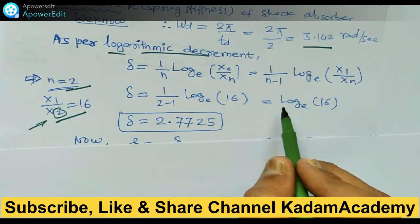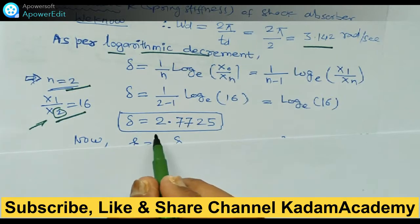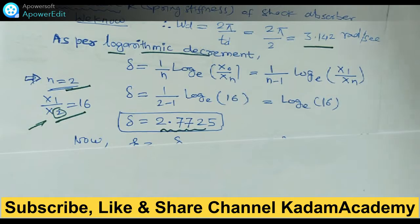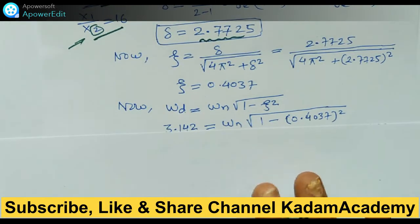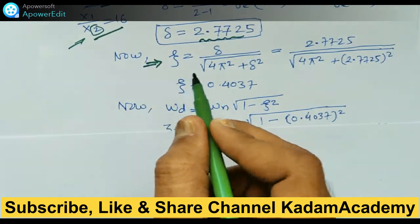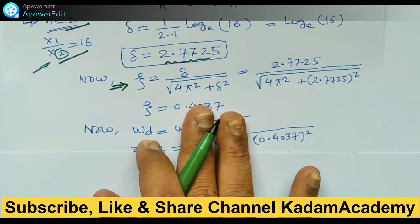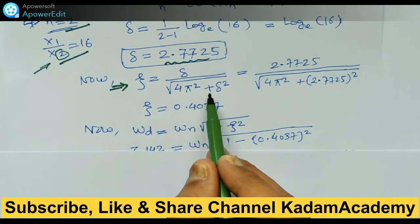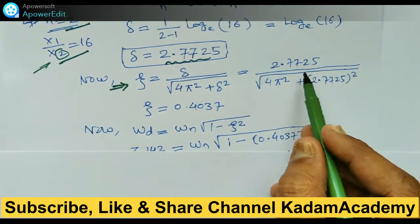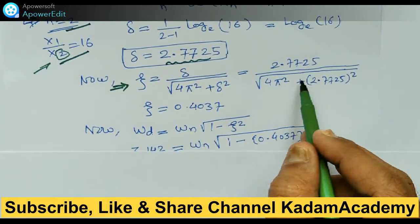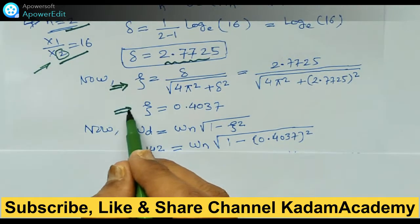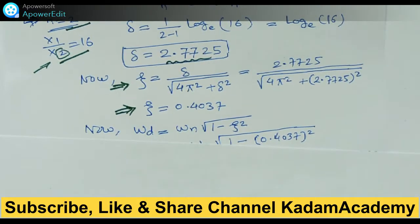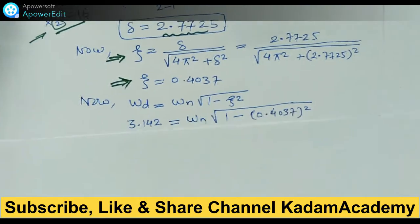Next, the damping factor zeta is equal to delta upon the square root of 4π² plus delta². Putting the value of delta in this equation, the answer becomes zeta = 0.4037.